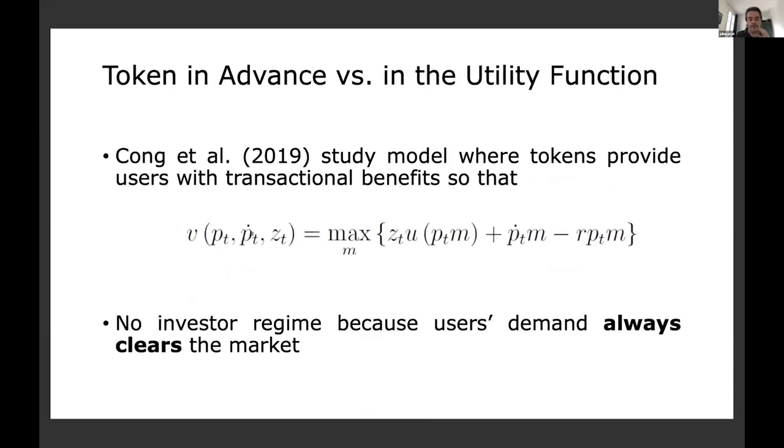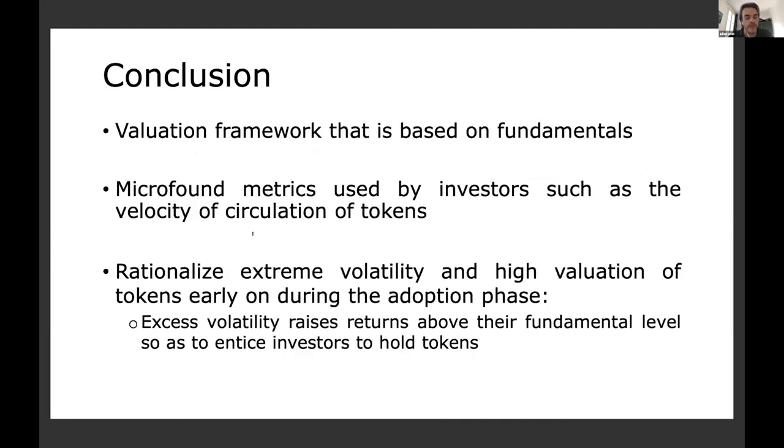Okay, so let me say two things. First, there is a paper by Cong and I think it will be presented later on. Cong and Kota will be presented later on in that conference, which is very related to our model, but we use token in advance. They use token in the utility function. So they don't have a speculator regime. That's the main difference. And let me conclude. Sorry for rushing a little bit. So we have a valuation framework that is based on fundamentals. Microphone metrics used by investors, such as the velocity of circulation of tokens, which is commonly used by people in the crypto community, but we don't really have a model that explains why it should be important. And then the main new insight, I think, is that we rationalize the extreme volatility of tokens during the adoption phase, because this excess volatility is precisely what allows tokens to have a return that is high enough to attract speculators. That's it. Thanks a lot.